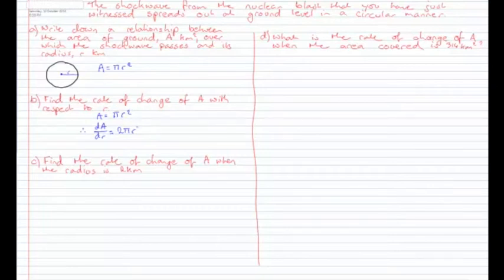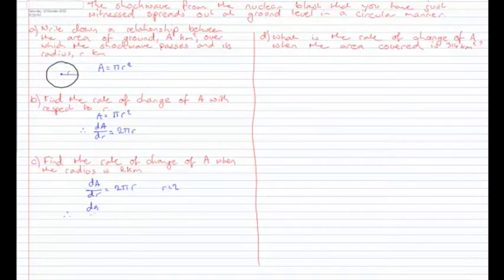Part C: find the rate of change of A when the radius is 2 kilometres. Because it's asking for the rate of change, we use the rate of change formula: dA/dR = 2πR. Substituting R = 2: dA/dR = 2π × 2 = 4π, which is approximately 12.57 kilometres squared per kilometre.